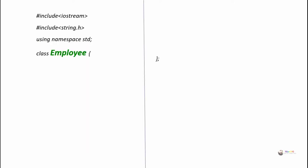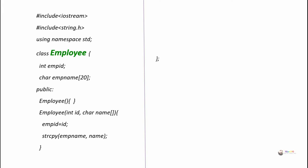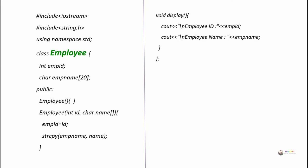We create a class named employee with two private data members: emp_id and emp_name. In the public section, we include a default and parameterized constructor. The parameterized constructor initializes emp_id and emp_name. A display method is written to display the values of emp_id and emp_name. In the main method, we create an object pointer named obj using the new operator: employee star obj equal new employee, passing 101 as the id and Mumbai as the employee name.